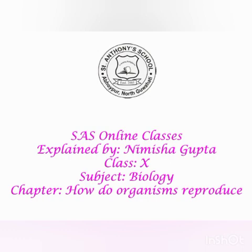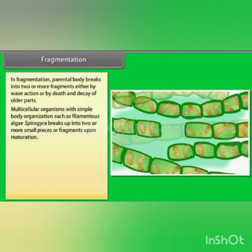Today we will discuss other methods of asexual reproduction in simple multicellular or unicellular organisms. The first is fragmentation. What is fragmentation? Fragments means small pieces. In fragmentation, the parent body breaks into two or more fragments, either by mechanical injury or on maturation, and each fragment then grows up into a new organism.